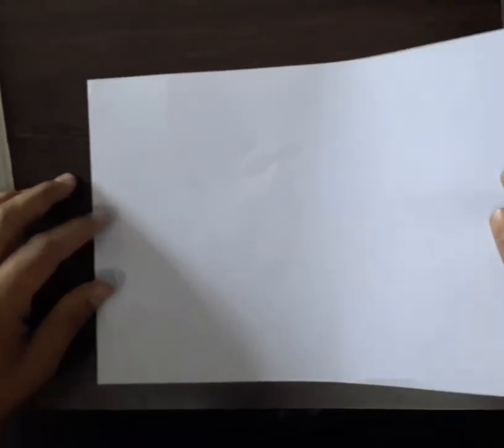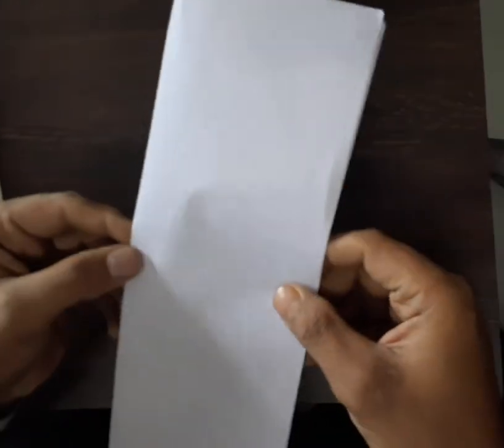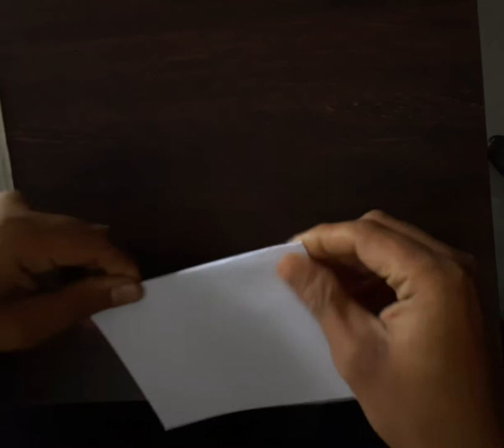Today we have to discuss about how to make a paper vesture. Please take one A4 size paper, fold it into two parts, just like that. And again you have to fold this paper, just like that.